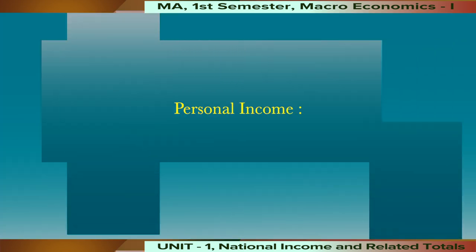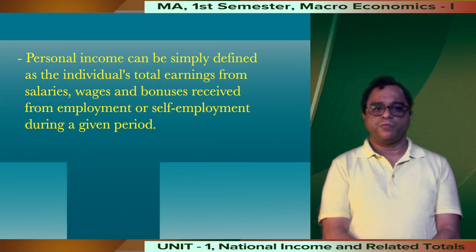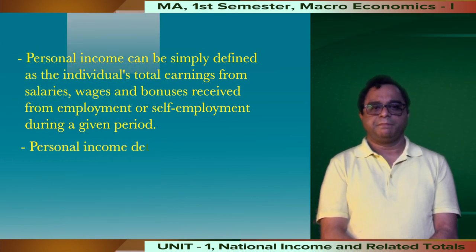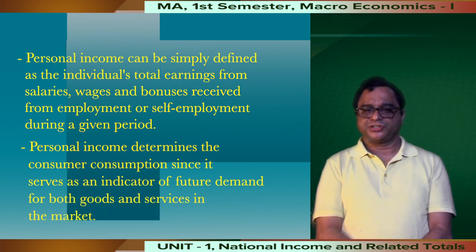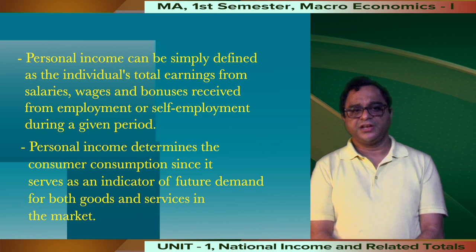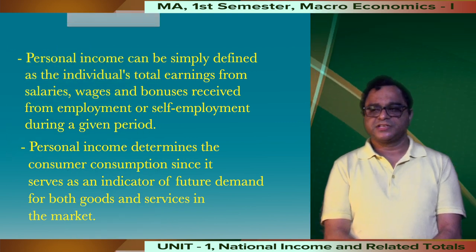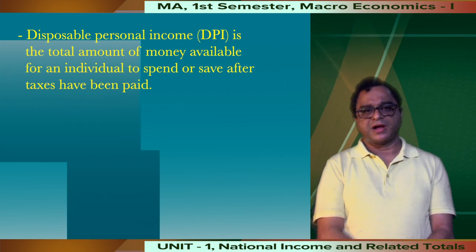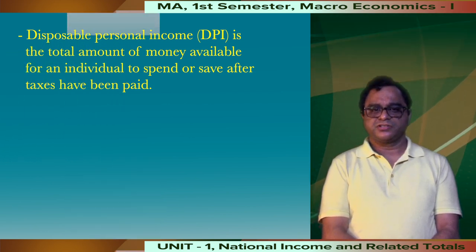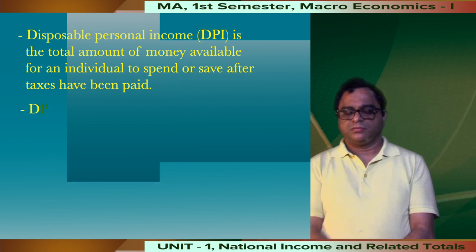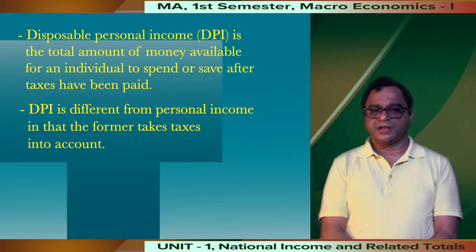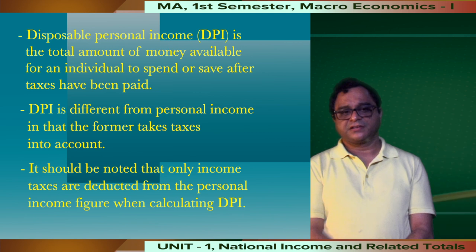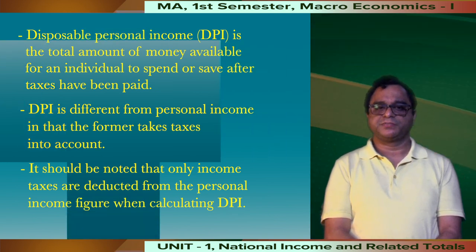Personal income can be simply defined as an individual's total earnings from salaries, wages, and bonuses received from employment or self-employment during a given period. Personal income determines consumer consumption since it serves as the indicator of future demand for both goods and services in the market. Disposable personal income is the total amount of money available for an individual to spend or save after taxes have been paid. It should be noted that only income taxes are deducted from the personal income figure when calculating disposable personal income.